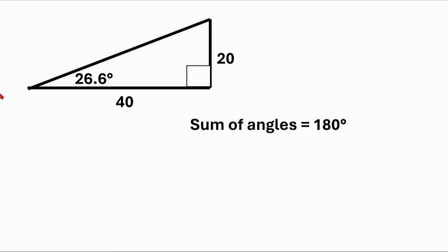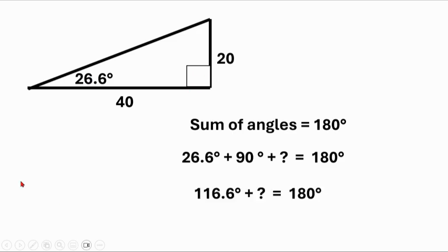The easiest way to do this is to recognize that the sum of interior angles of a triangle is 180 degrees. And we know two of them, we know the 26.6. And we know this right angle here is 90 degrees. We add those together, we get 116.6 plus this missing angle equals 180.